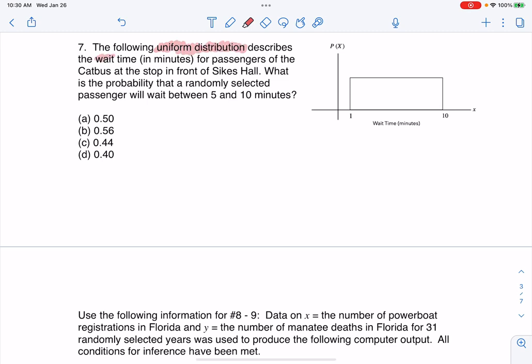And then I can see my variable, right? Wait time, and there it is in minutes. So I'm going to just take notes here. This is a uniform distribution question. And this is from chapter five.